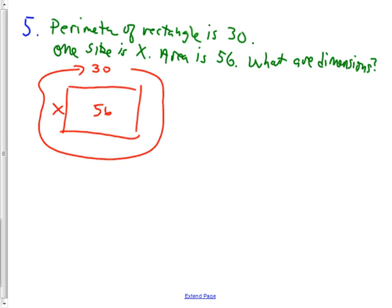Alright. So to set this up, first of all I would say, I know from the area being 56 that if I call this y for just a second, that the area formula for a rectangle is A=length×width. The area is 56 equals the length, which is x, times the width, which is y. It doesn't really matter which one's which there.